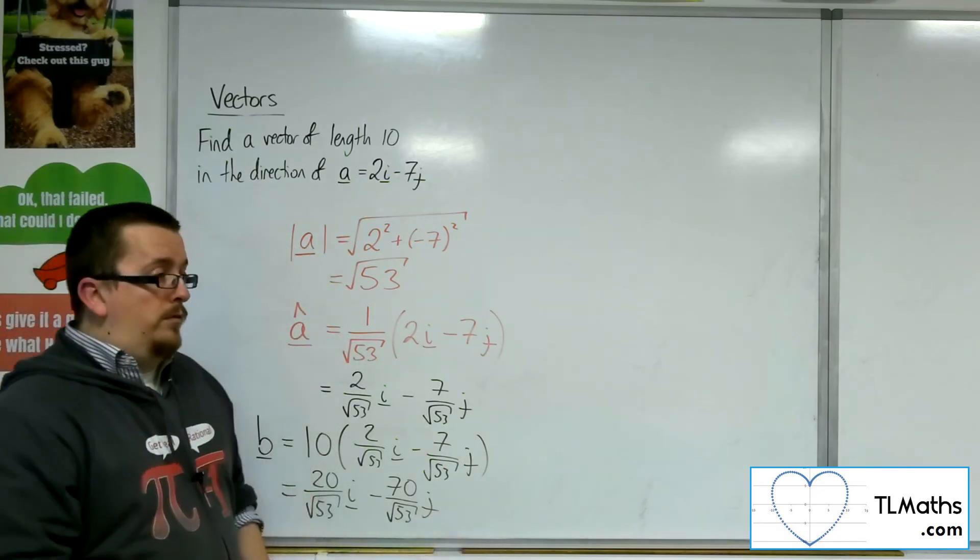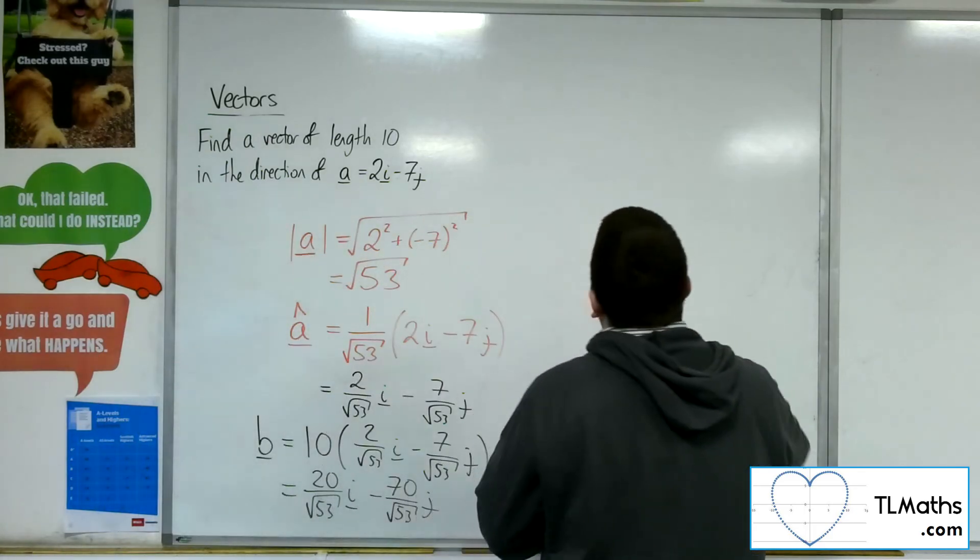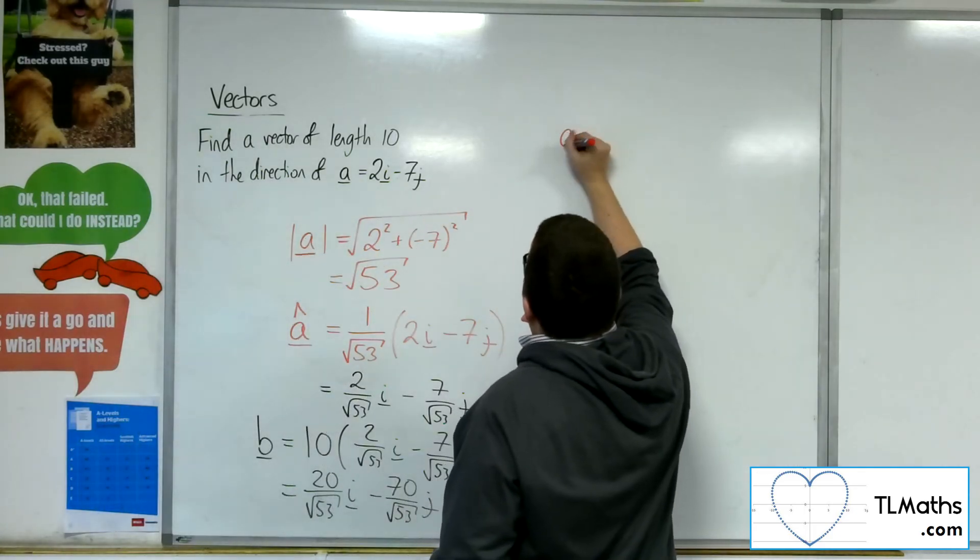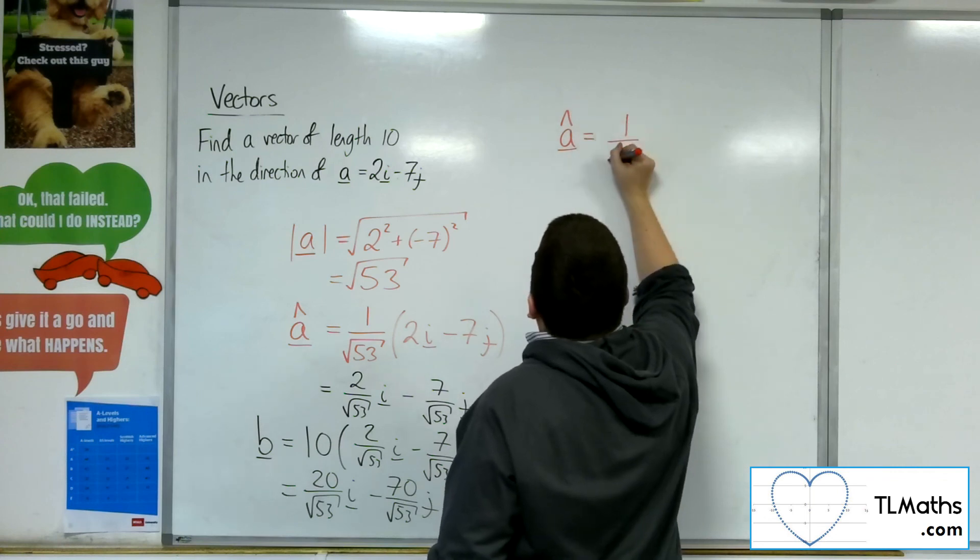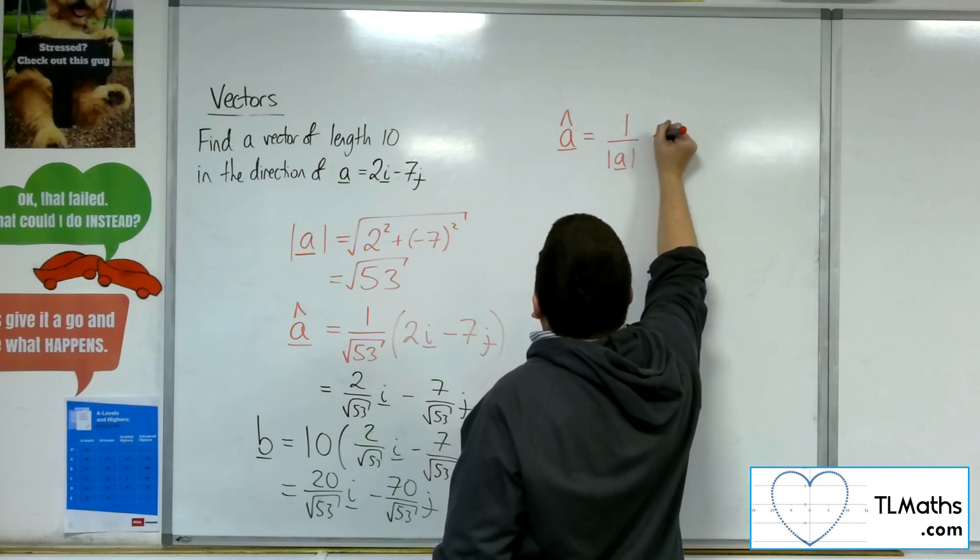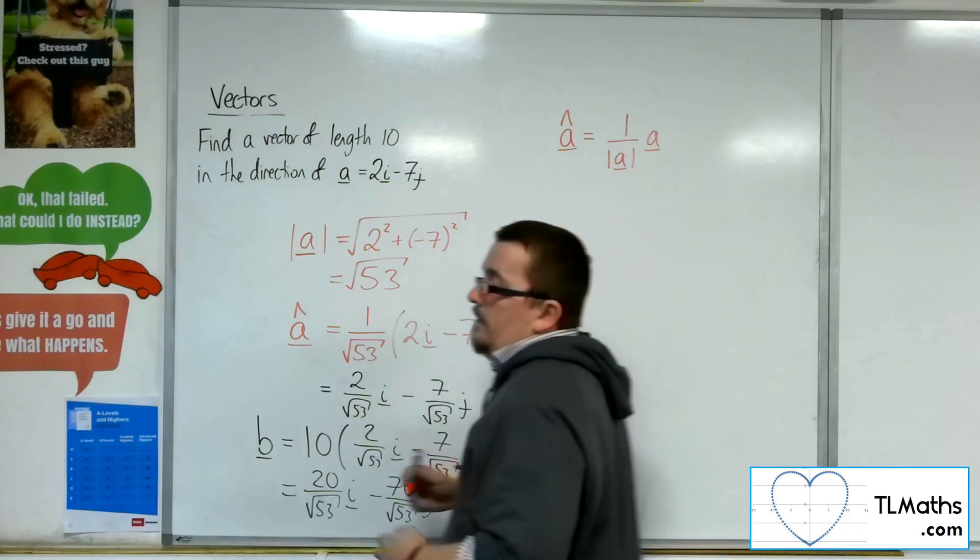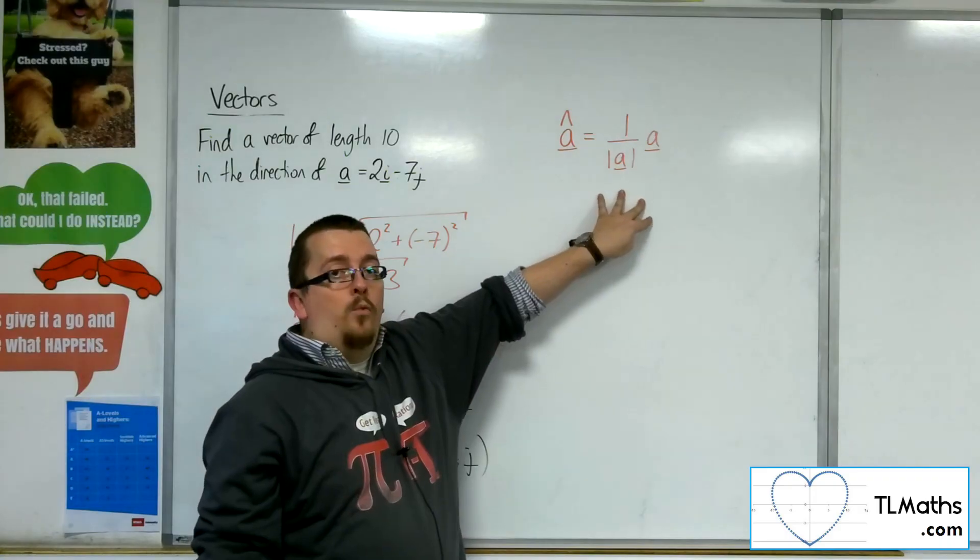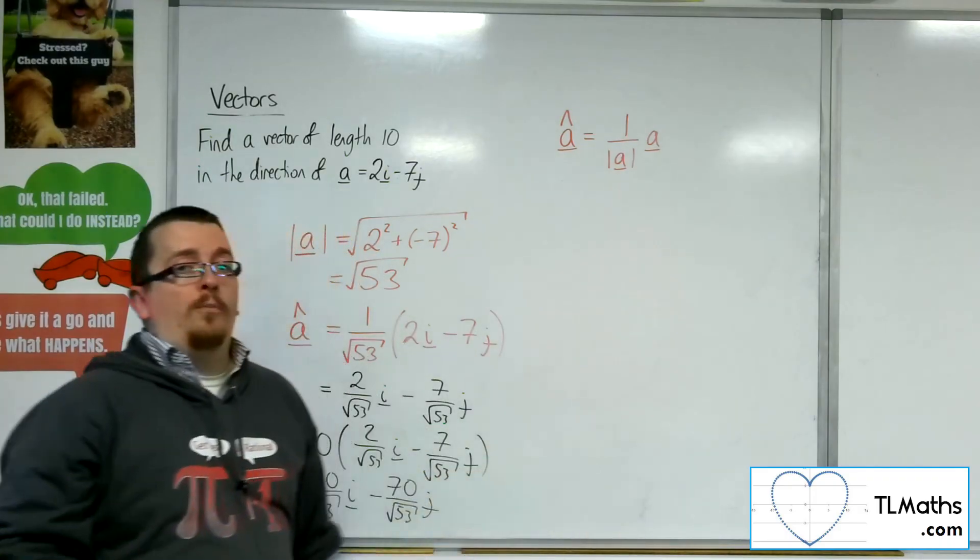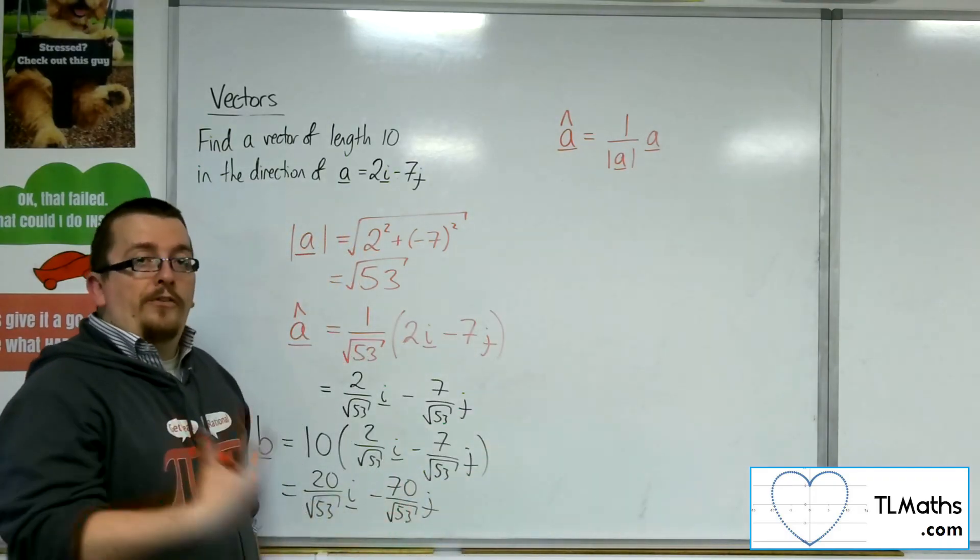So in general, if you want to find a unit vector of the vector A, then it is 1 over the length of A times the vector A. So that will give you a vector of length 1, and then you can multiply by whatever you need to solve the problem.